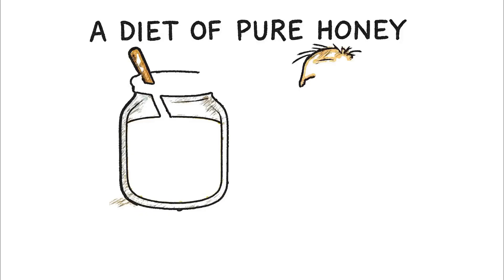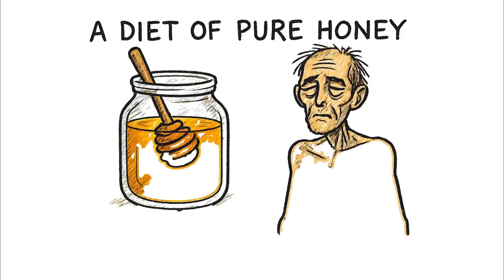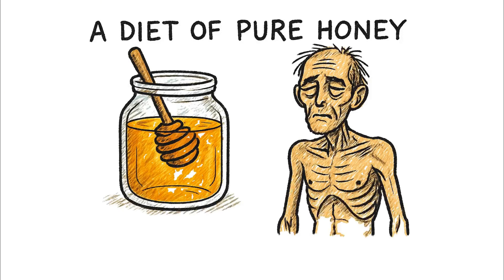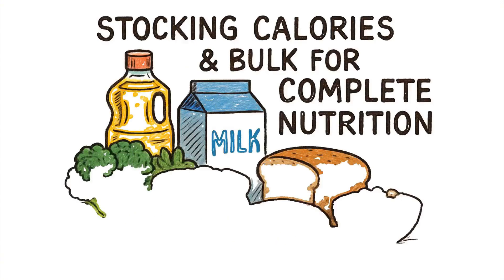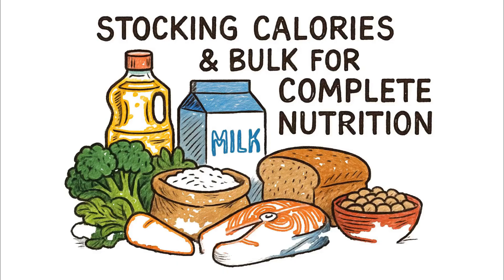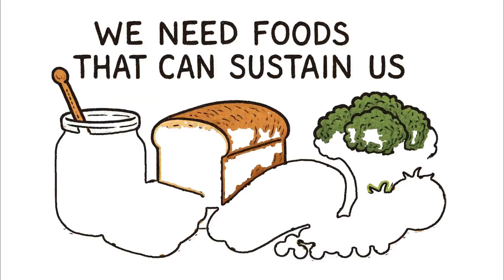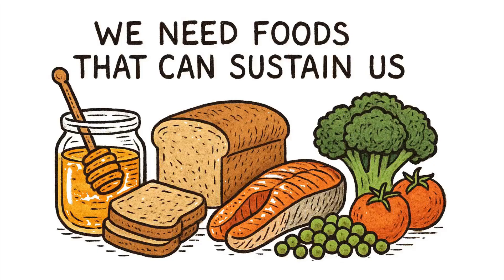A diet of pure honey would eventually lead to severe nutritional deficiencies, muscle wasting, and a compromised immune system. True preparedness is about creating a resilient system. And that means stocking calories in bulk that provide complete nutrition. We need foods that can sustain us, not just give us a temporary rush.